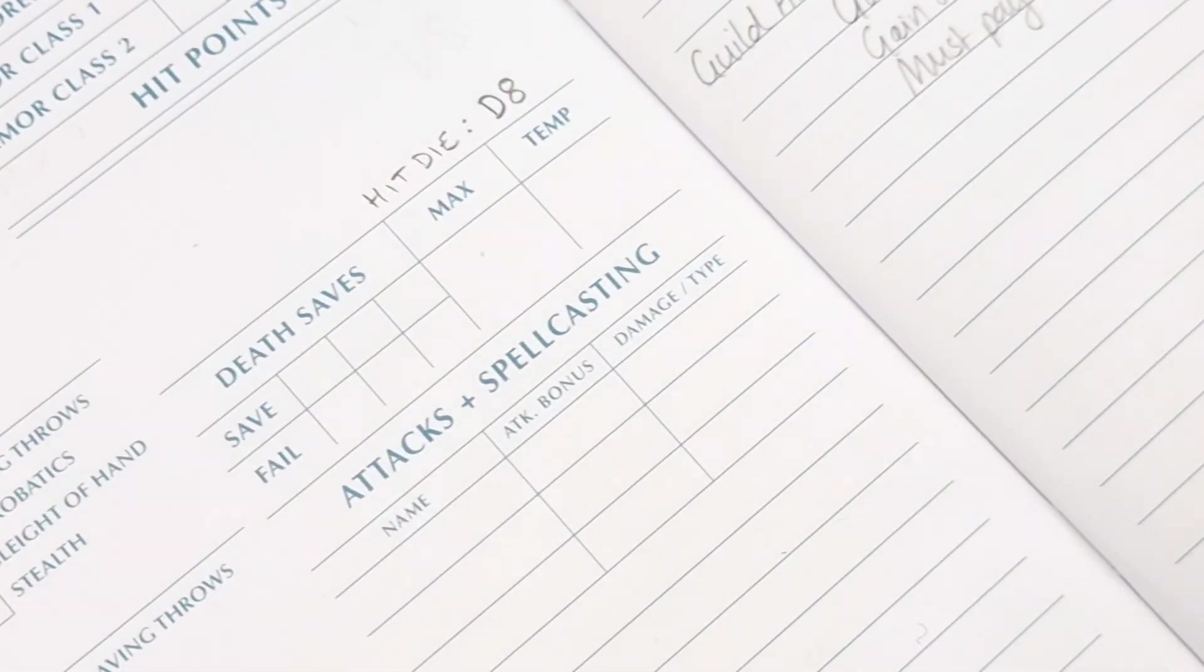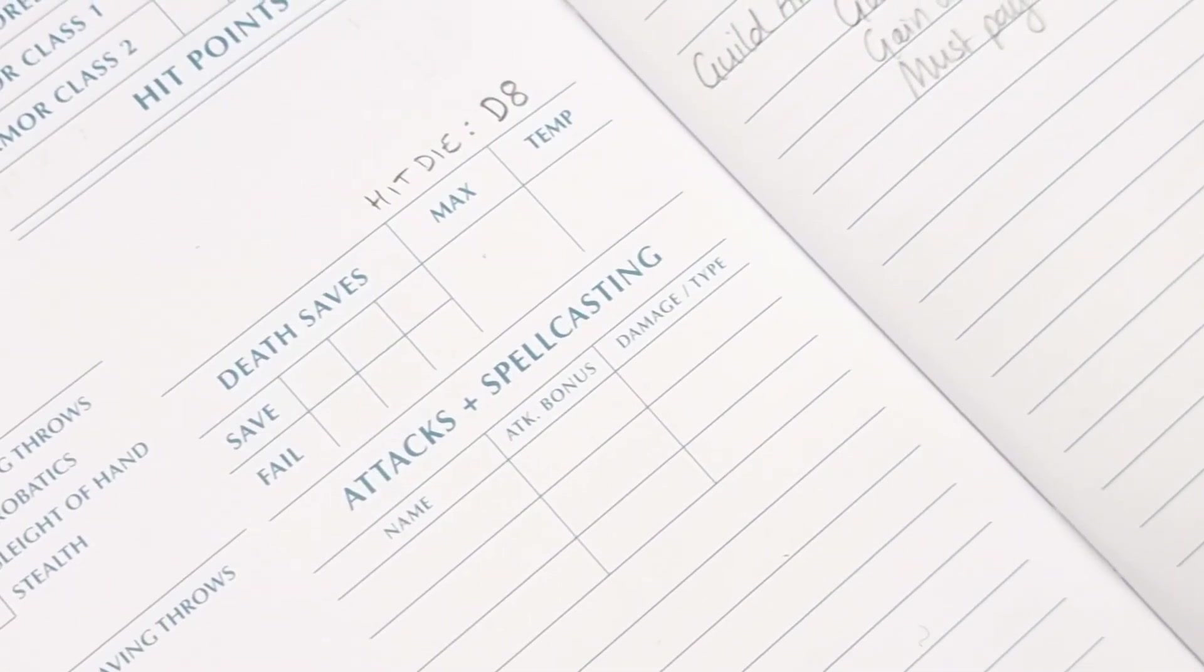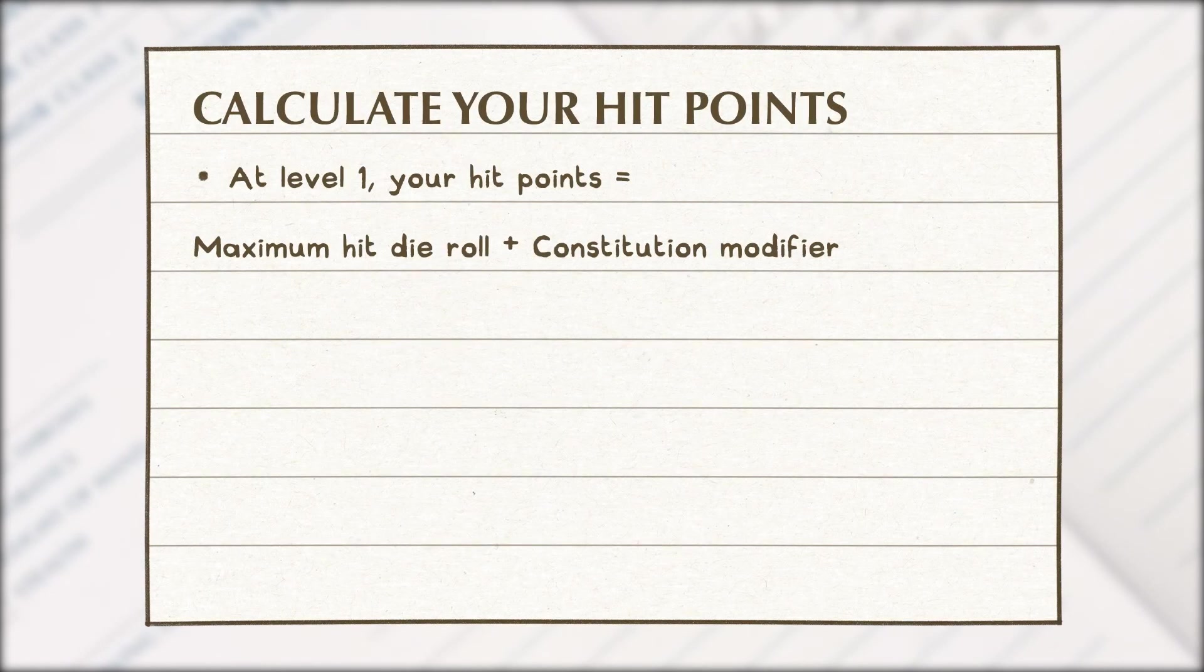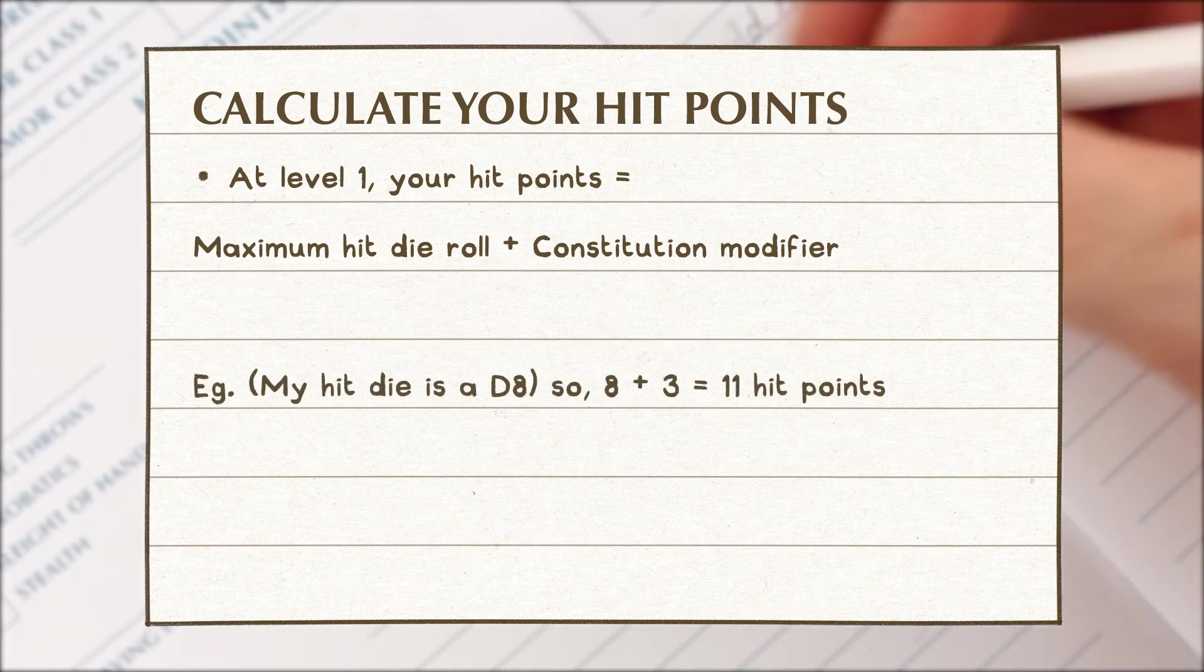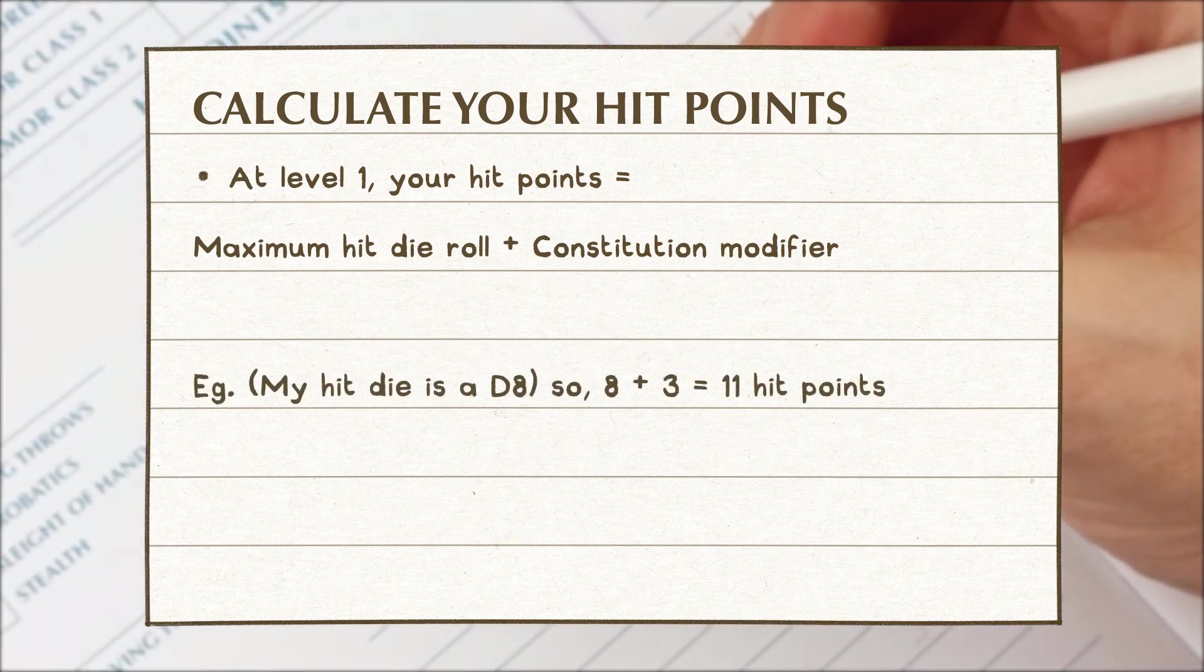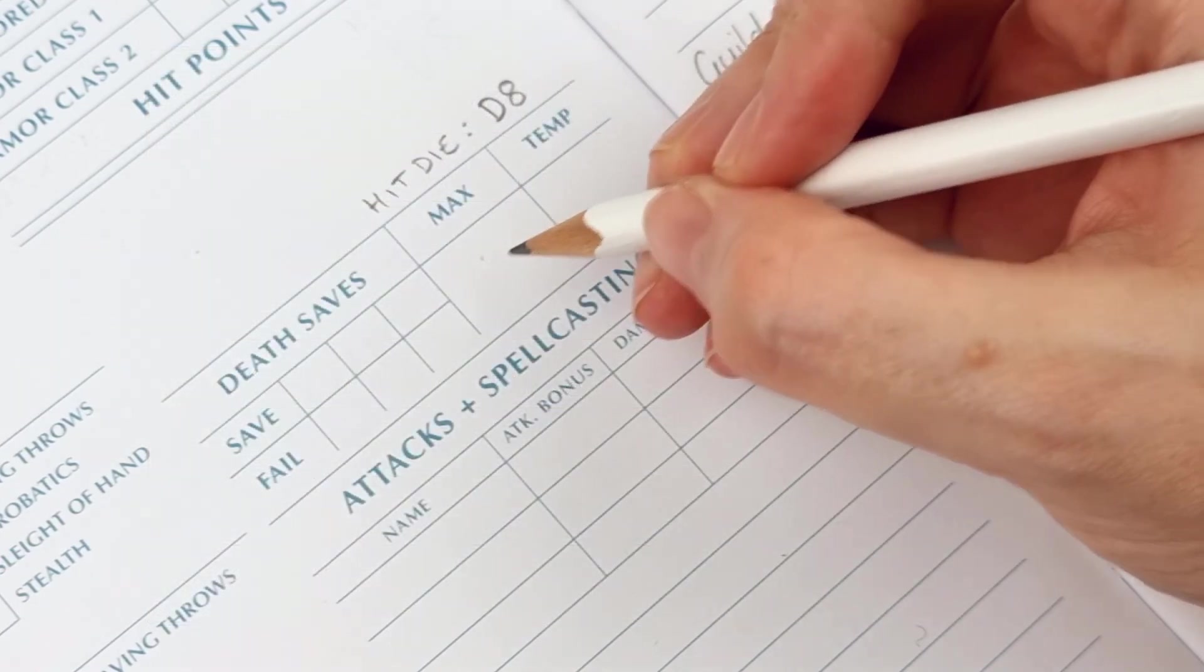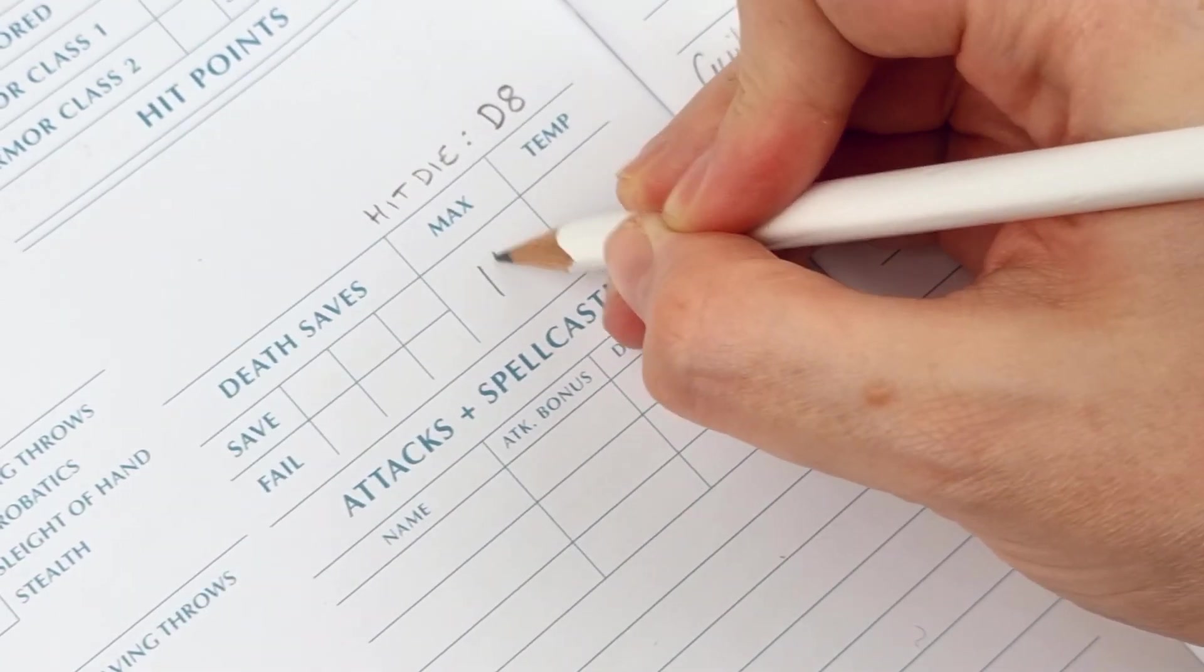On to hit points. You have a maximum amount of hit points that needs to be calculated. At level 1 your hit points are equal to the maximum number of your hit die plus whatever your constitution modifier is. So my hit die is a d8 and my constitution modifier is plus 3. So in this case 8 plus 3 means I have 11 hit points.